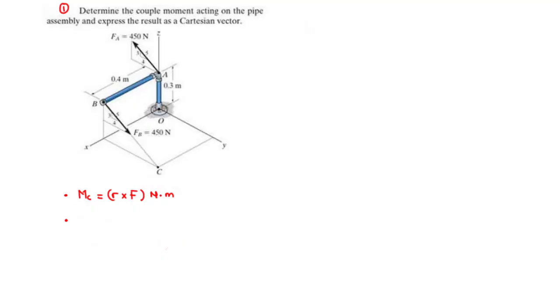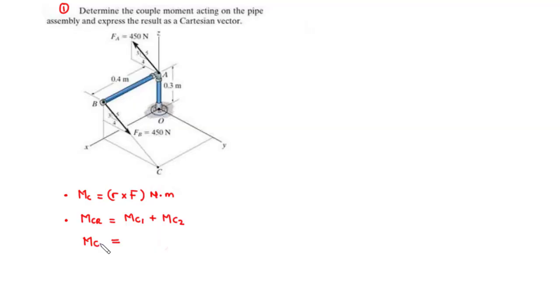Now, if you want to find the resultant couple moment of a system with more than one couple moment, the resultant couple moment is simply the vector sum of all the couple moments in the system: MC1 plus MC2. Because they are vectors, they have XYZ components. If the couple moments in the system are more than two, we can use a more generalized formula such that MCR equals the summation of R cross F.